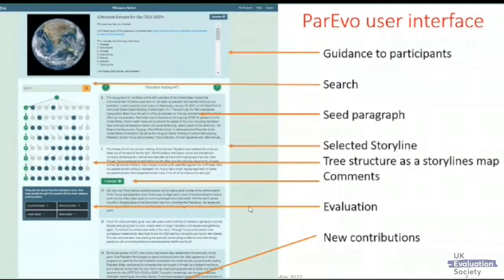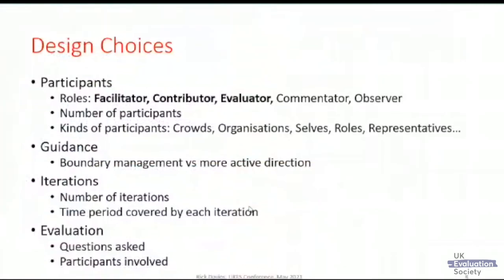There's a search facility to find keywords across storylines, with results highlighted in the tree diagram. At the bottom left there's a panel showing the results of people's evaluation judgments, and there's a comment button under contributions where somebody has added a comment. This panel gets updated with each new iteration — the tree map, storyline text, and facilitator guidance all update as the exercise progresses.